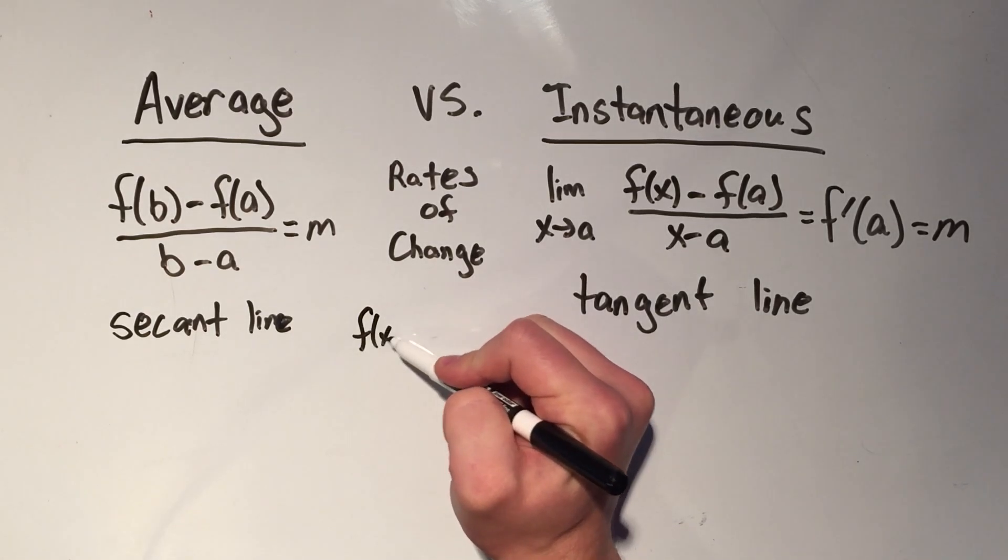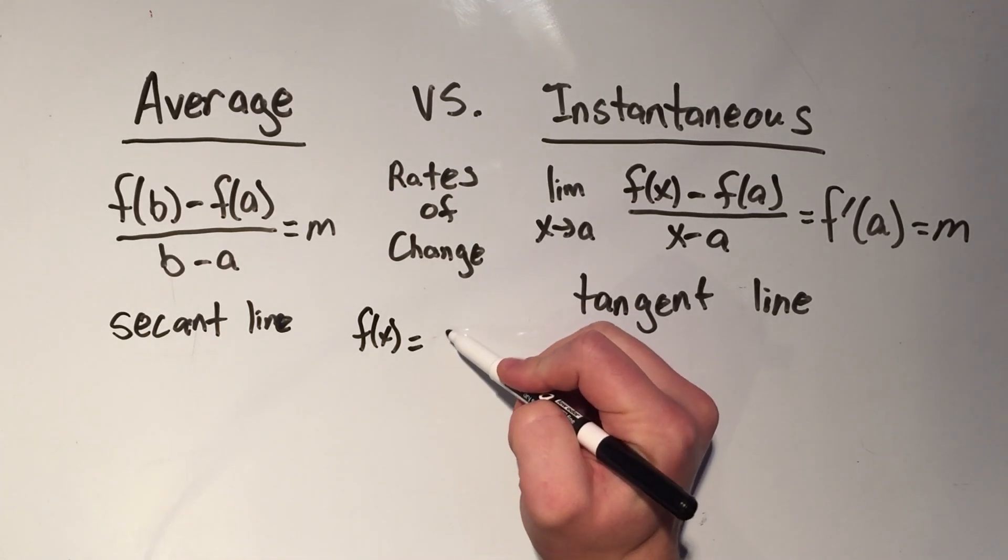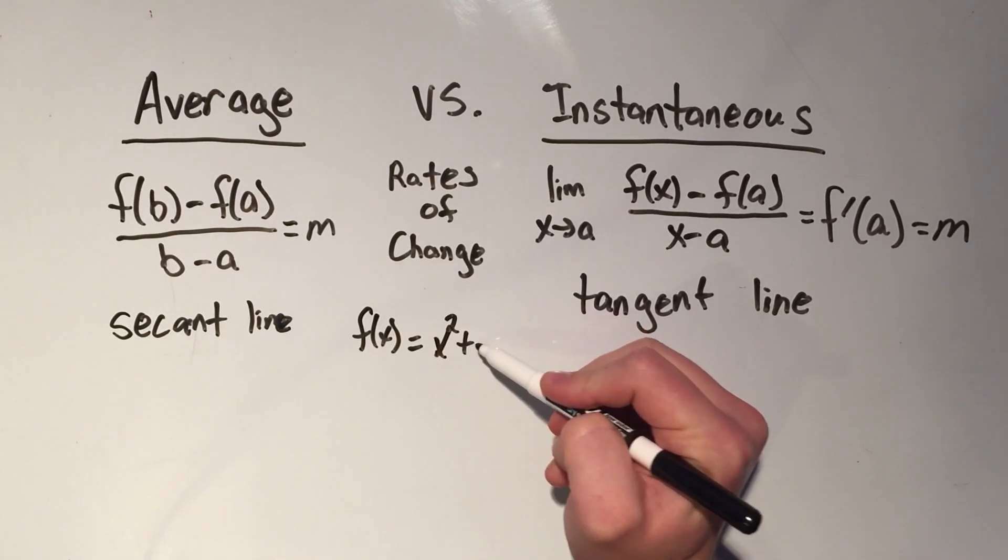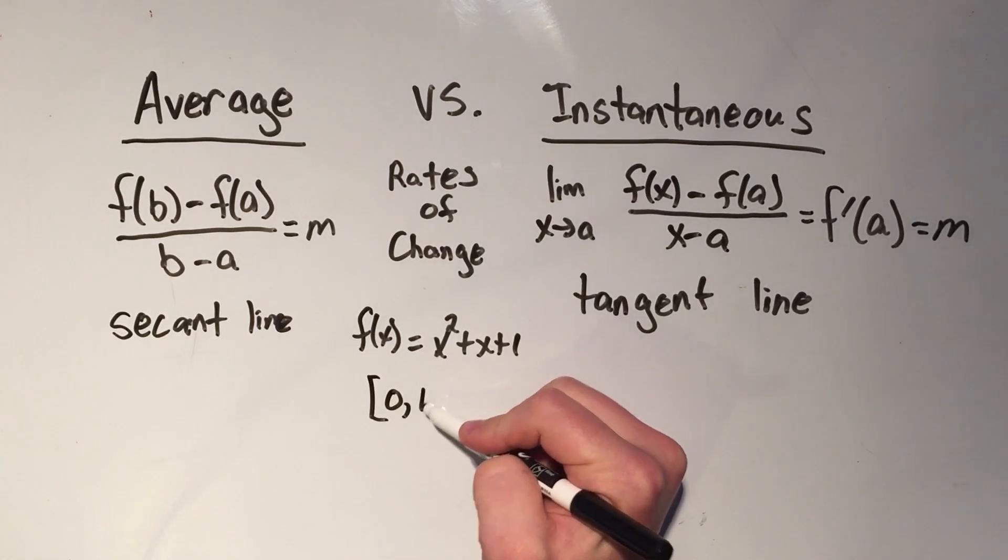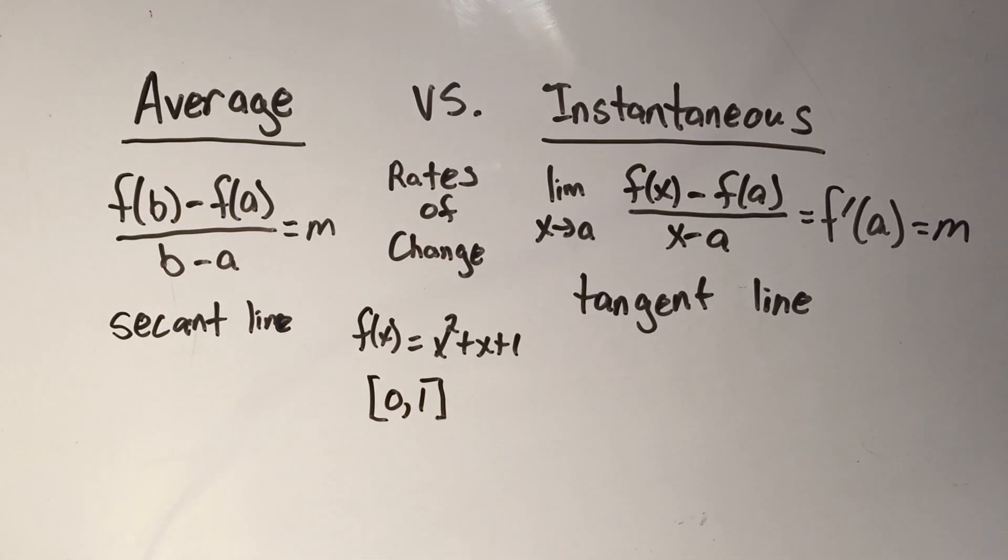And the function I'm going to use is the function from the last video. If you watched my video on the derivative, I have the function x squared plus x plus one. Let's find the average rate of change on the interval zero to one, just to make my numbers easy.